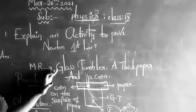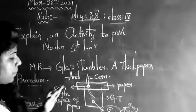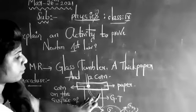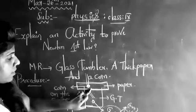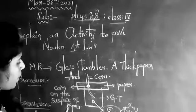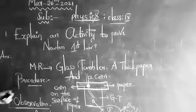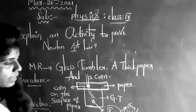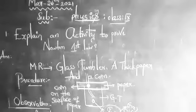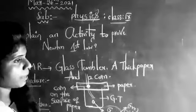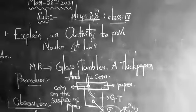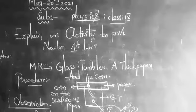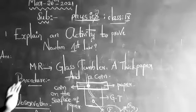Materials required: glass tumbler, ethyc paper, and a coin. Procedure: Let us consider a glass tumbler. Place ethyc paper on the surface of the tumbler, then place a coin on the surface of the paper. Initially, drag the paper with your free hand — the coin will be disturbed and finally falls into the glass tumbler due to gravitational force. Similarly, repeat without dragging the paper. In this case, we observe that the coin remains at rest position. By this, we can conclude that Newton's First Law is proved practically. Is it clear enough?